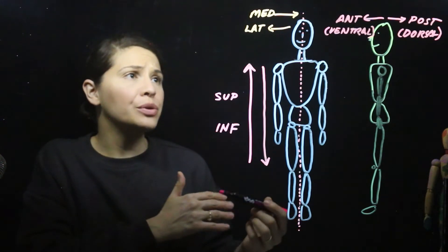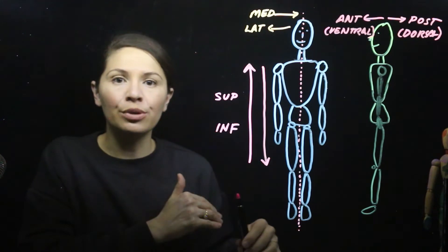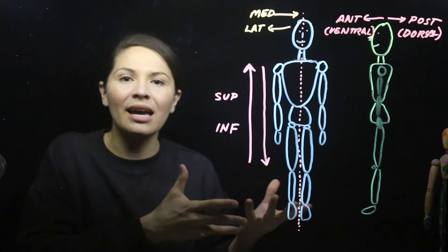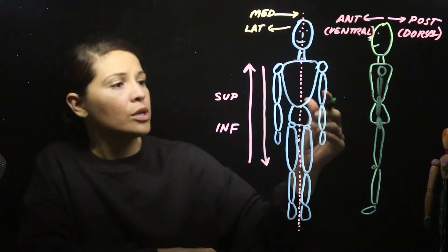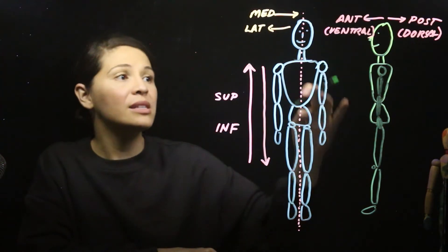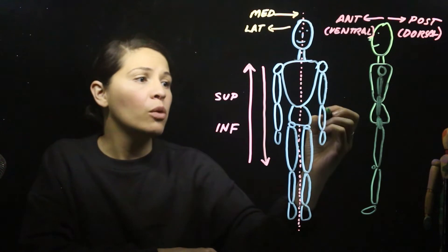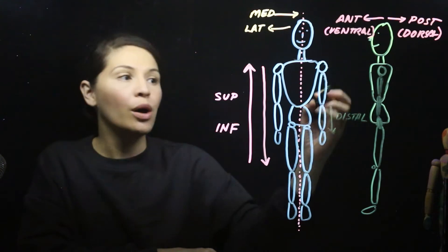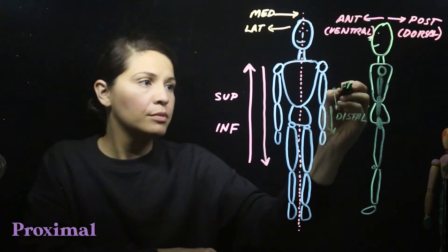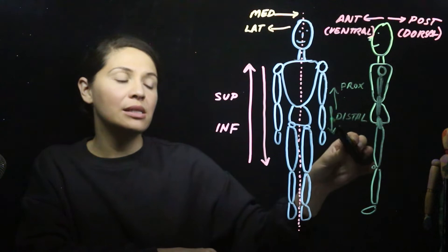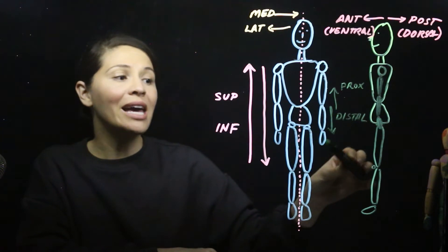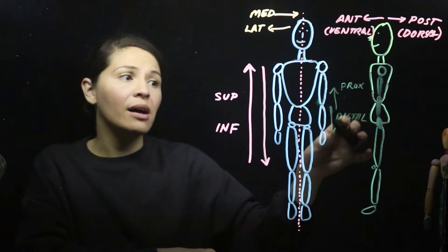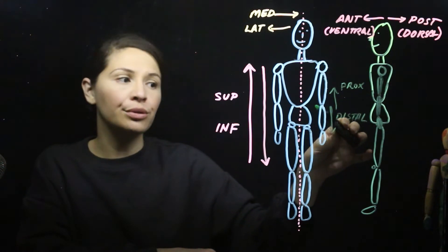Another term used in anatomy is proximal and distal, which is about something being further away versus closer. Things that are further away from their origin point — for example in the upper limb — would be distal, and things that are closer would be proximal. An example: the hand is distal to the elbow, and the elbow is proximal to the hand.